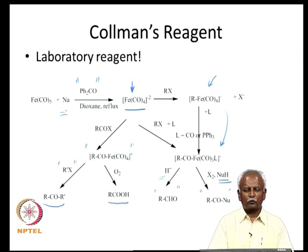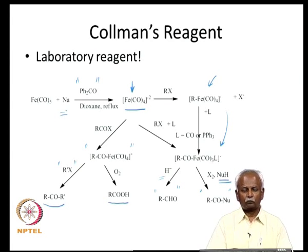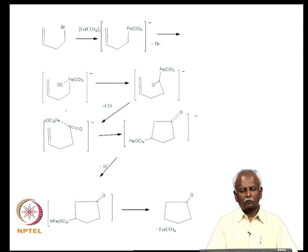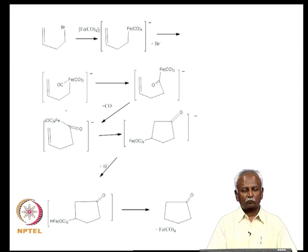Collman's reagent turns out to be a useful reagent for synthesizing laboratory-scale chemicals easily. It is a laboratory reagent, not an industrial reagent, because one has to use expensive sodium and refluxing dioxane in order to generate it.